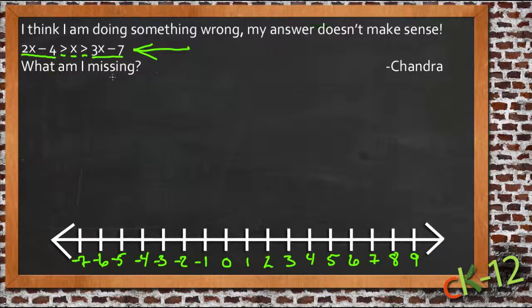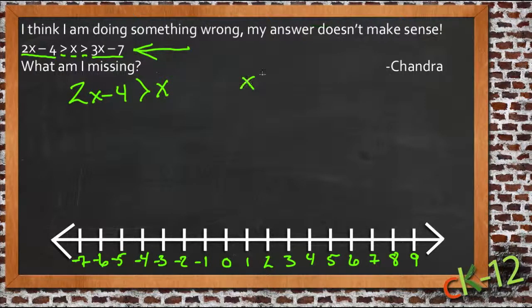Now Chandra, the first thing to do when you have a long inequality like this is to split it into two parts. So we're going to solve both 2x - 4 > x and we're going to solve x > 3x - 7. Now the key to recognize here when you split something like this apart so it can be solved is that both of these bits of information have to be true.